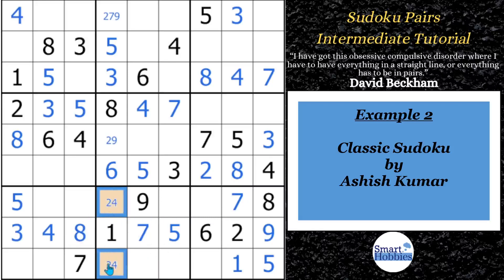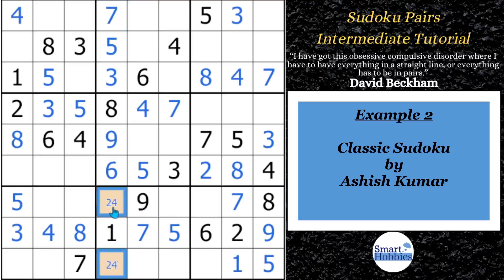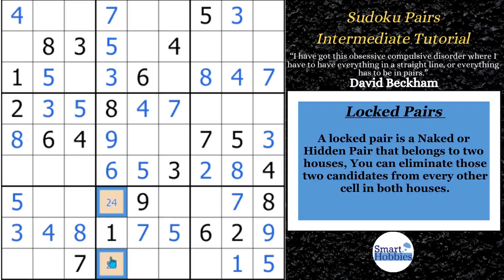What you might notice is right here you have a naked pair. The two and the four are the only two possibilities for those two cells. Like we said in our first example, these candidates cannot be the solution to any other cell in this house — column four. So that means we can eliminate a two from right here and solve this cell for a nine. And then we can eliminate the two and the nine that we just solved, and solve this cell for a seven. However, we're not done. Since this naked pair is within block eight, it's part of two houses: column four and block eight. These are called locked candidates.